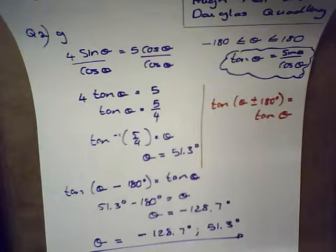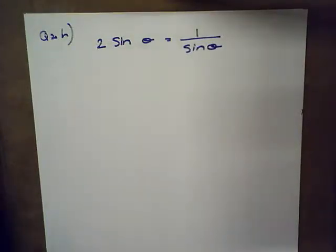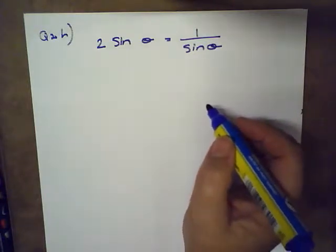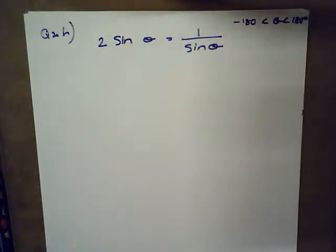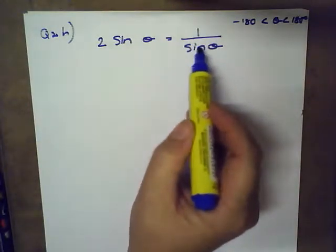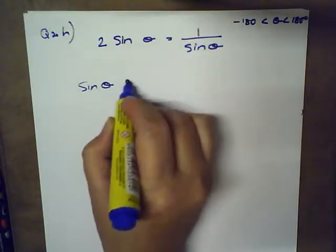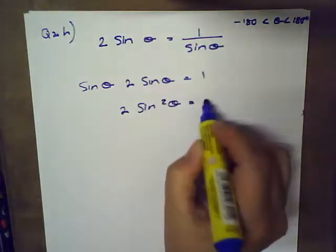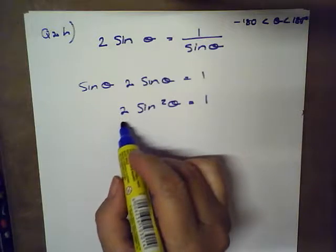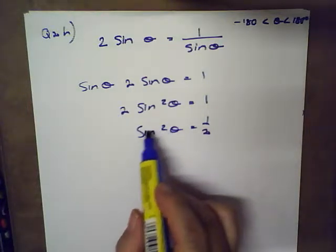Let's move on to the next one — Question 2h: 2 sine theta equals 1 over sine theta. The interval stays the same: negative 180 to 280 degrees. I do not want sine in the denominator, so I'm going to multiply both sides by sine theta. That gives me 2 sine theta times sine theta equals 1, which simplifies to 2 sine squared theta equals 1. Dividing both sides by 2 gives sine squared theta equals one half.